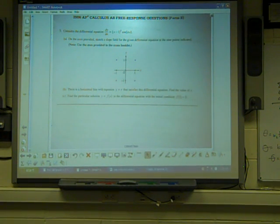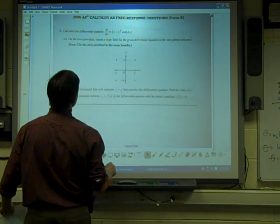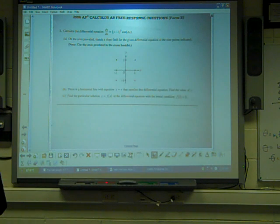Alright, so here is 2006 free response number 5 on form B. It says, consider the differential equation dy/dx equals (y-1)² times cosine πx.